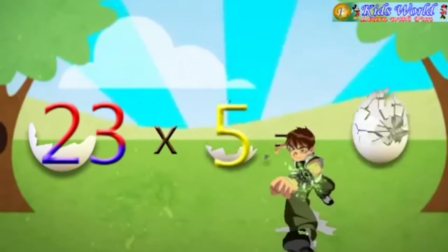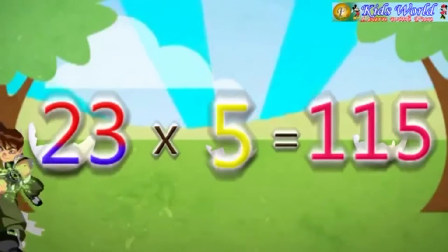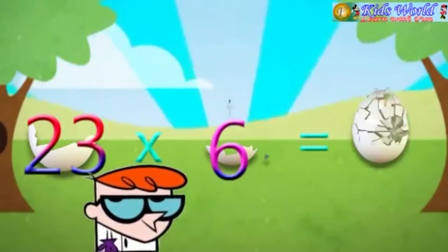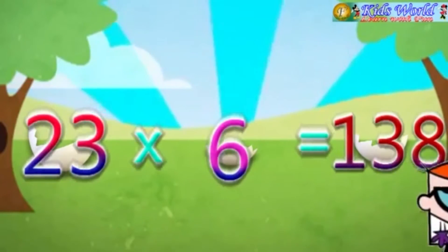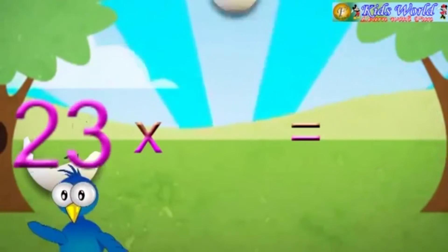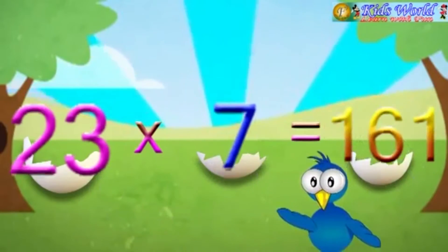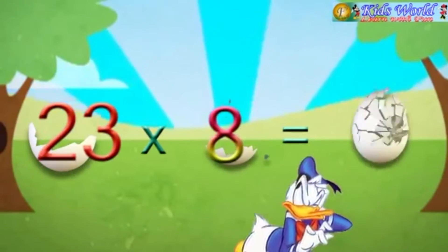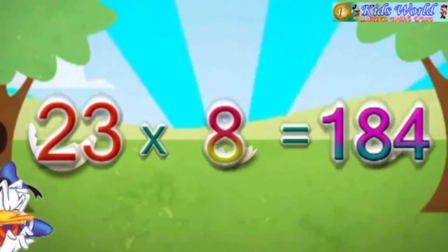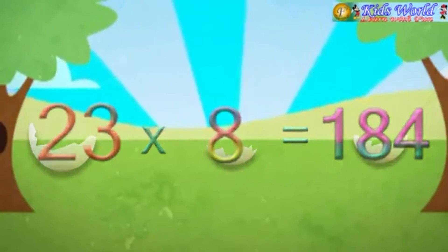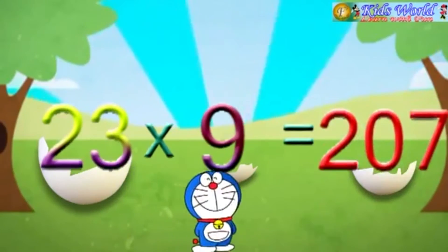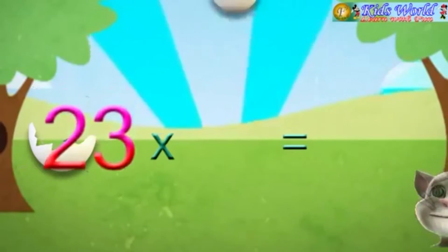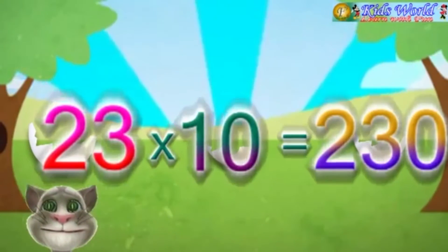23 into 5 is equal to 115. 23 into 6 is equal to 138. 23 into 7 is equal to 161. 23 into 8 is equal to 184. 23 into 9 is equal to 207. 23 into 10 is equal to 230.